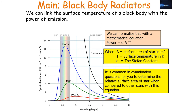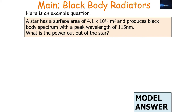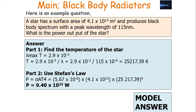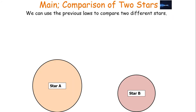It is common in examination questions to determine the relative surface area of a star when compared to other stars. Here's an example question: a star has a surface area of 4.1 × 10¹³ metres squared and produces a black body spectrum with a peak wavelength of 115 nanometres. What is the power output of the star? Part one: find the temperature of the star using λ × T = 2.9 × 10⁻³, rearranging to find T — giving approximately 25,217 K. Don't round to significant figures yet as we're halfway through. Part two: use Stefan's law — P = σAT⁴ — substituting your values to get a power output of 9.40 × 10²³ watts.